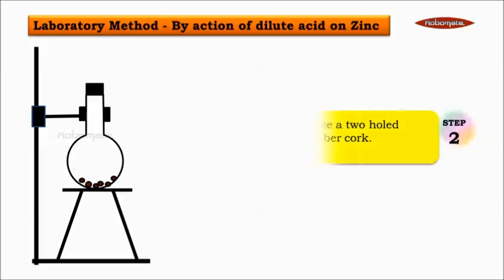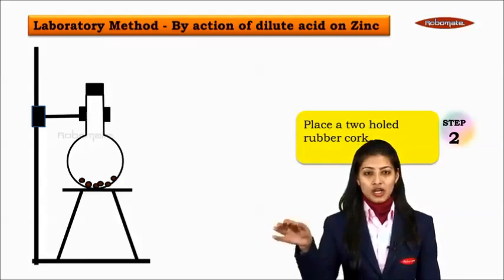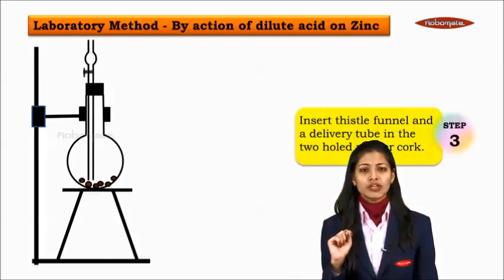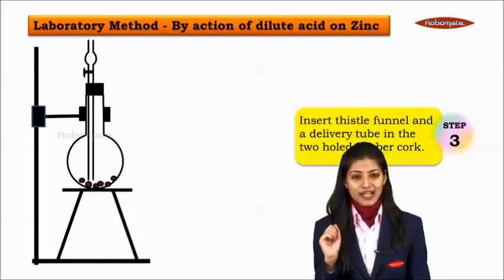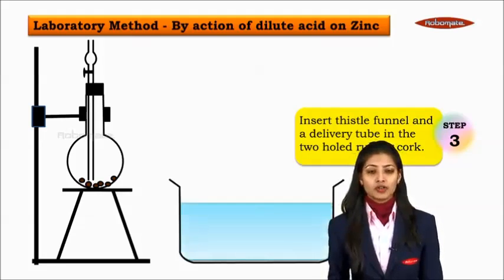In the second step, what do we do? We place a two hole rubber cork, attach it to the round bottom flask. Through one of the holes, we are going to attach a thistle funnel and through the second hole, we are going to attach a delivery tube.